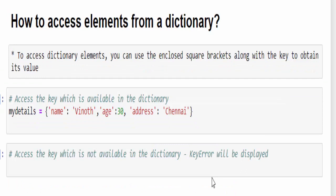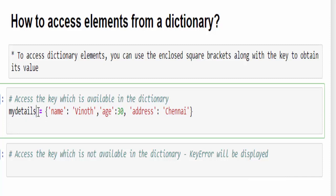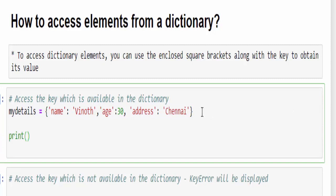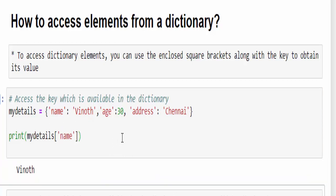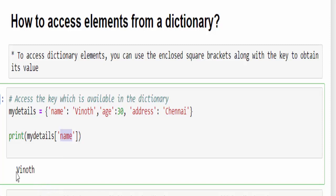The next topic is how to access the element from your dictionary. It is very simple. We have to mention the key inside the enclosed square brackets. We'll see with an example. Here we created a dictionary, and the variable name is my details which contains three keys: name, age, and address with respective values. Now how to access each key? Print, mention the variable name, then square bracket. Inside that, you have to mention the key. For example, I will mention the key name. Just run it. The name key contains the value Vinoth.